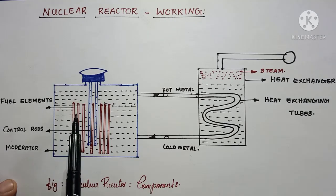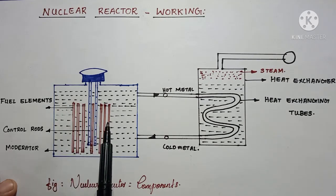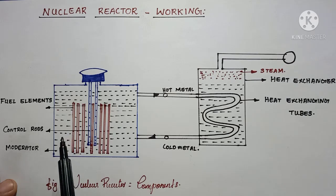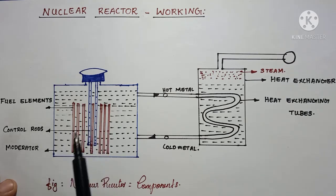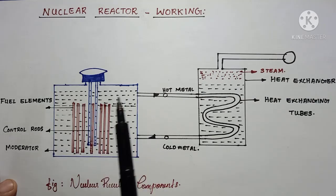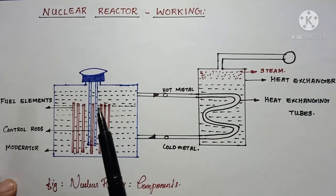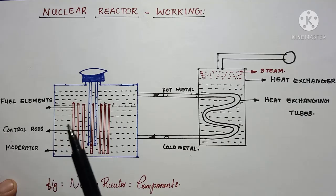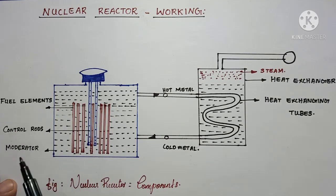Whenever we bombard this fuel element with an electron, it splits and releases many number of electrons and a large amount of heat. These newly released electrons will again bombard with the rest of the fuel elements and newly formed elements, then again release many number of electrons and large amount of heat energy.